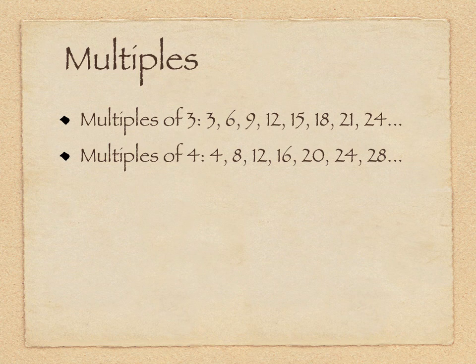So essentially we're just counting by threes. In the next example, multiples of four, same idea, just counting by fours: four, eight, twelve, sixteen, twenty, twenty-four, twenty-eight. And they carry forward, obviously, they go on.